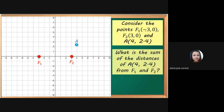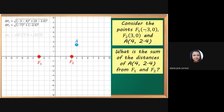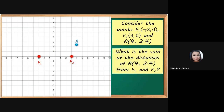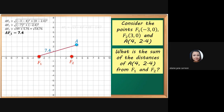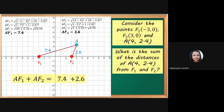What is the sum of the distances of point A (4, 2.4) from F sub 1 and F sub 2? We're going to use the distance formula. The distance from point A to F sub 1 is 7.4, and the distance from point A to F sub 2 is 2.6. Adding the two, we have 7.4 plus 2.6 equals 10.